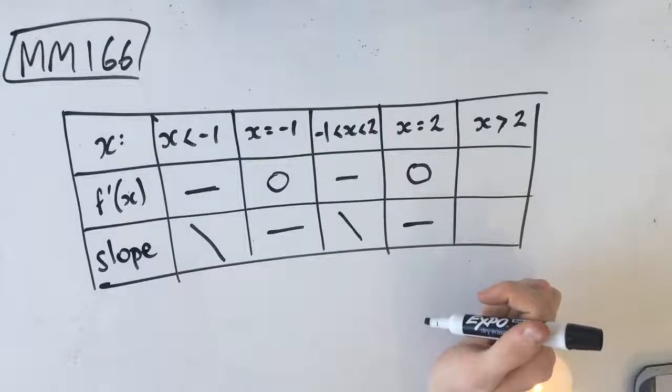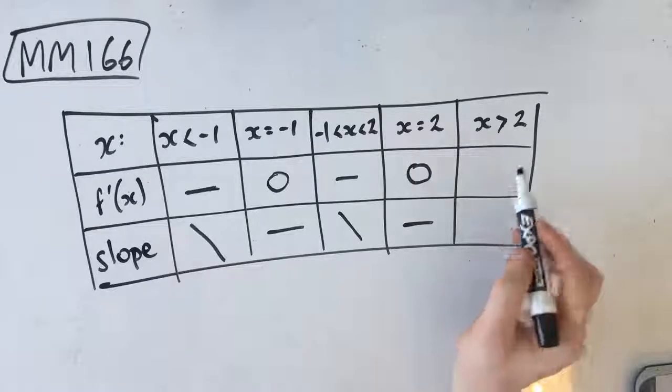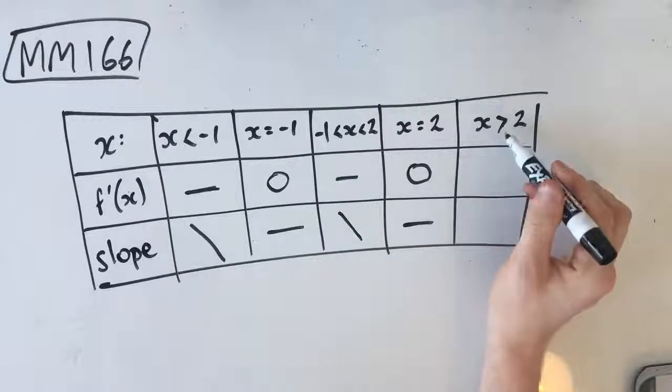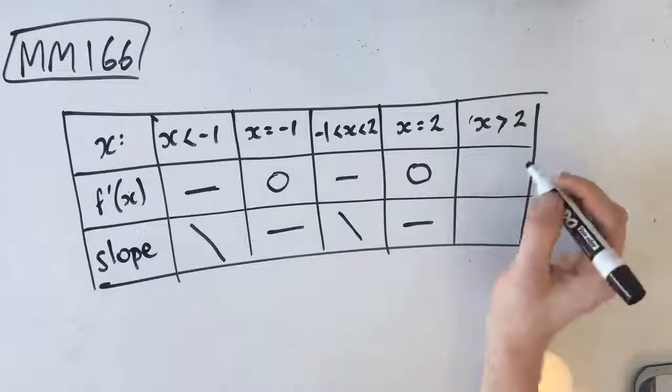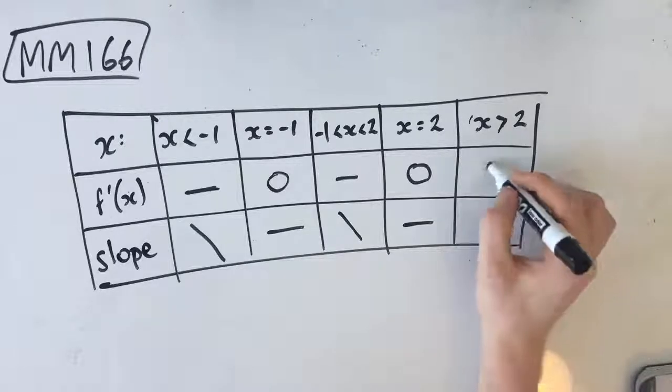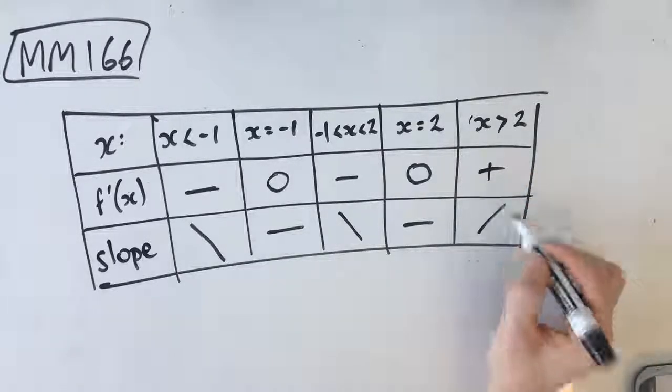Our last condition says that f dash of x is greater than 0 where x is greater than 2. So at x is greater than 2, our gradient is greater than 0, which means that it's positive, which means that it's going up.